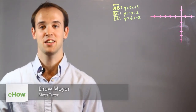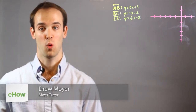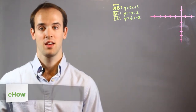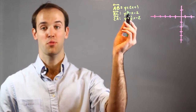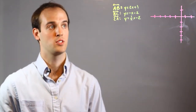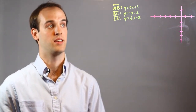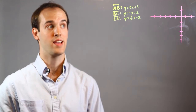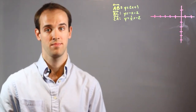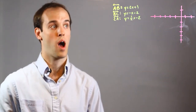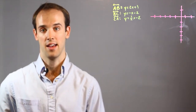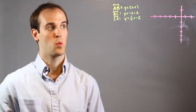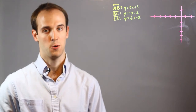Hi, I'm Drew Moyer, and this is an equation for solving for the coordinates of a triangle. To solve for the coordinates, we're going to need the equations of each of the three lines that make up the triangle. So suppose I have AB is equal to y equals 2x plus 1, BC will be y equals negative x minus 2, and CA will be y equals one half x minus 2.